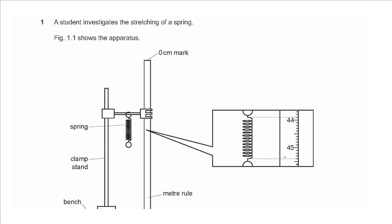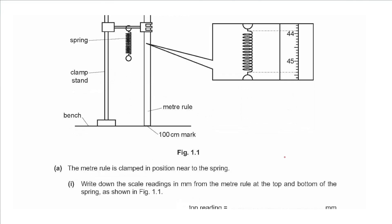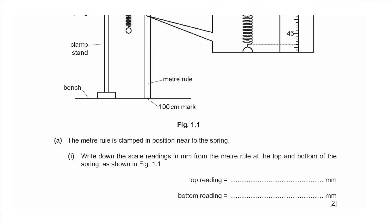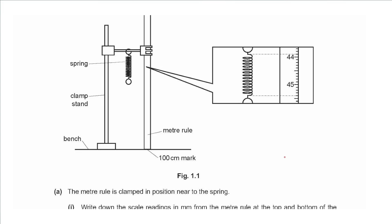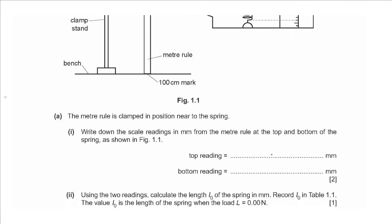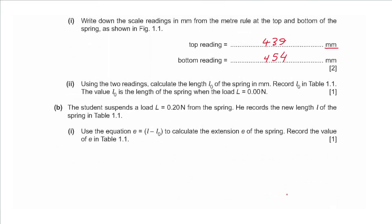Question 1 says a student investigates the stretching of a spring. Figure 1.1 shows the apparatus: a spring hanging from a clamp and a ruler next to it. Part a asks for scale readings in millimeters. The top reading is 43.9 cm, which gives 439 mm. The bottom reading is 45.4 cm, giving 454 mm.